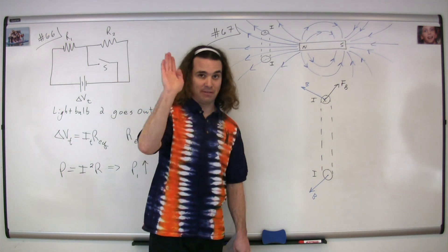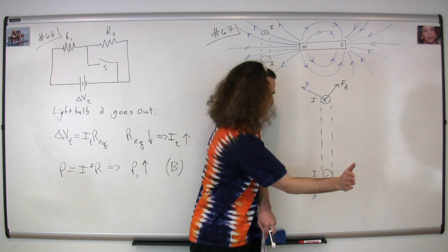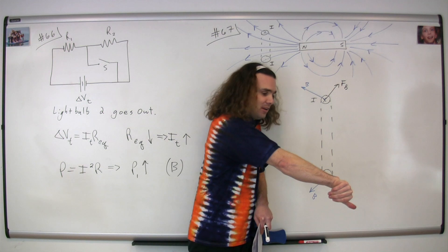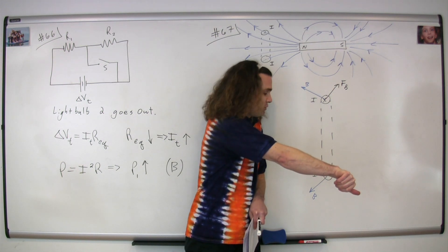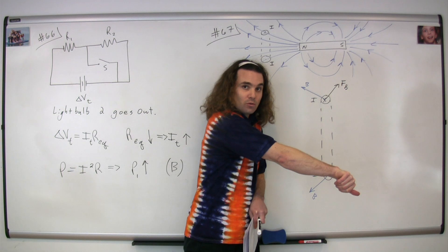Therefore, we take the fingers of our right hand, point them in the direction of the current, curl our fingers in the direction of the magnetic field, and our thumb points in the direction of the magnetic force, which is going to be down and to your right.